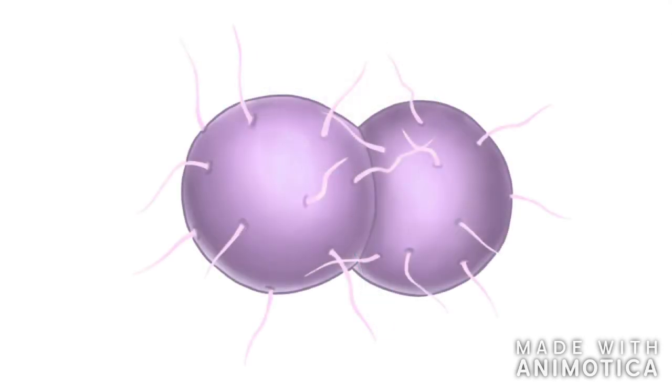Neisseria meningitidis is a gram-negative diplococcus. This means it is a round bacteria that typically forms pairs. Besides that, it is covered in a capsule and contains pili. Pili are long hair-like extensions that can interact with the environment.